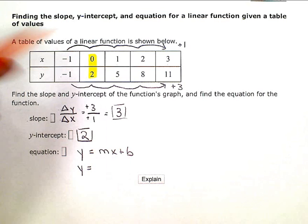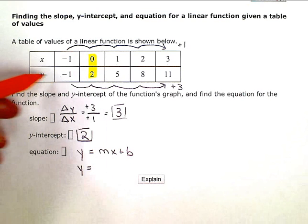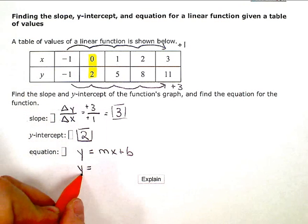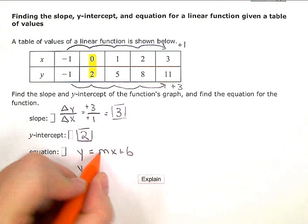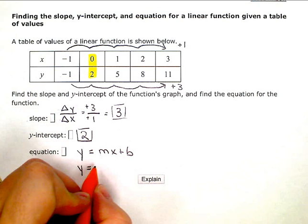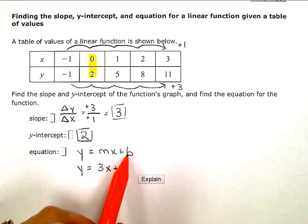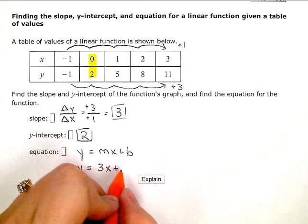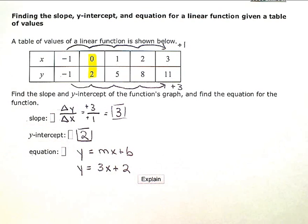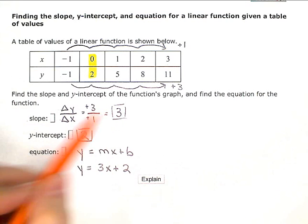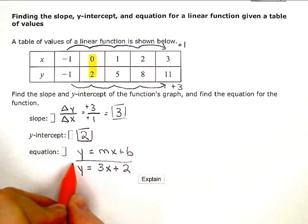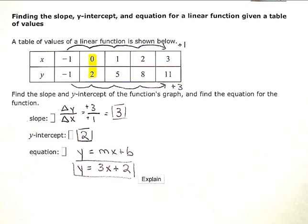So y equals, instead of m, I'm going to put in my slope, which is 3, then the x plus, and the b represents the y-intercept, which is 2. So 3 is the slope, 2 is the y-intercept, the equation is y equals 3x plus 2.